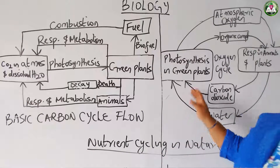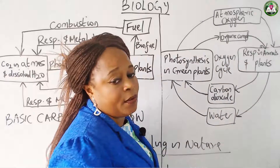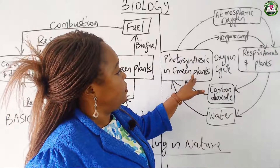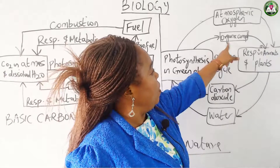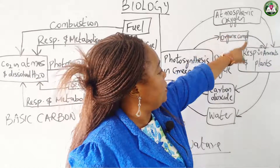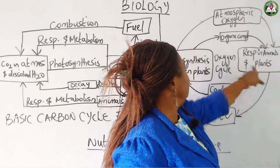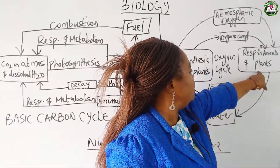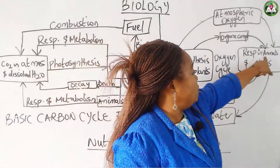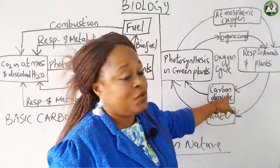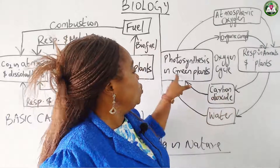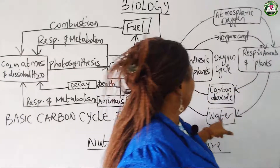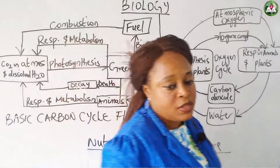Oxygen is released back into the atmosphere through the process of photosynthesis. What we have on the board is a diagram of the oxygen cycle. We have photosynthesis in green plants — oxygen in the atmosphere is released to plants and animals through photosynthesis. Organic compounds are also released to plants and animals. After being used, plants and animals release carbon dioxide into the atmosphere, which is used again for photosynthesis. Another byproduct is water, which is also used for the process of photosynthesis in plants.